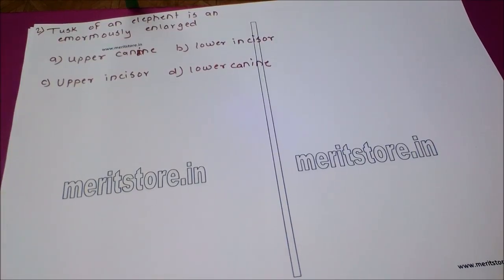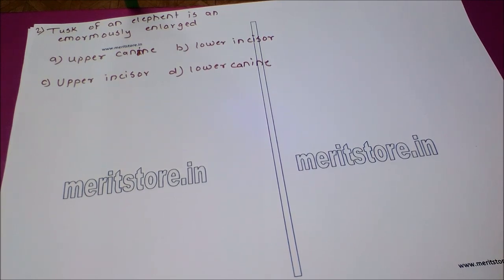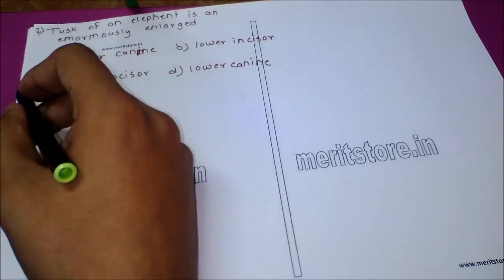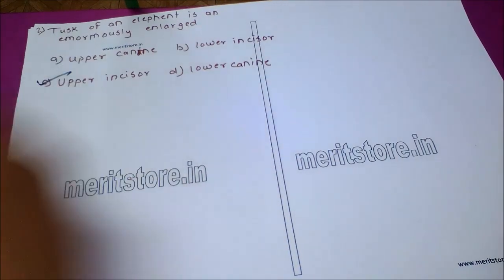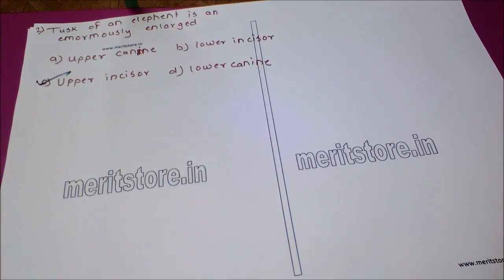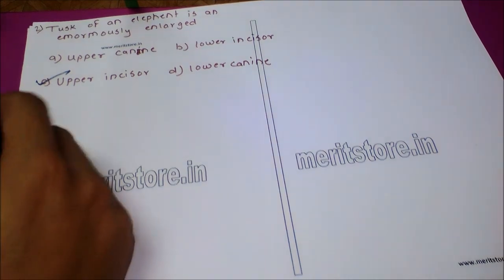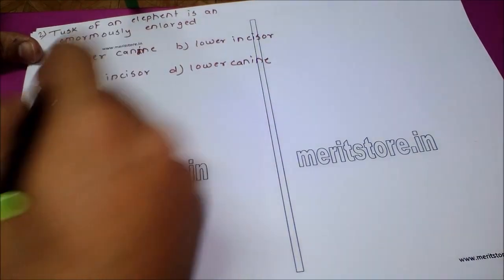The next question: the tusk of an elephant is an enormously enlarged — option A: upper canine, option B: lower incisor, option C: upper incisor, option D: lower canine. The correct answer is option C, upper incisor. The upper incisor of an elephant enlarges enormously and gives rise to the tusk-like structure of the elephant.